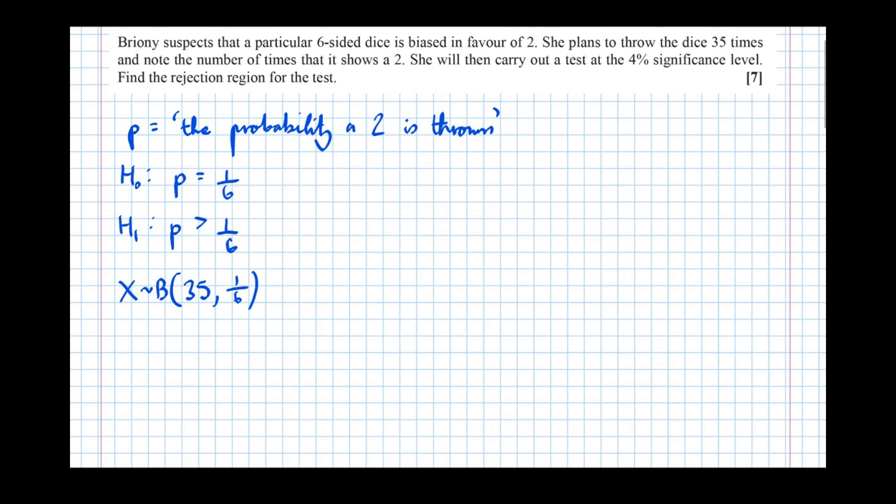So what we need to do now is find the rejection region at the 4% significance level. So drawing our sliding scale of probability, and the top 4% we're going to reject. And the reason that we reject this side of the distribution, the top 4%, is because we're testing for greater than a sixth. So it's going to be the right-hand tail of the distribution, the top 4%, that we reject.